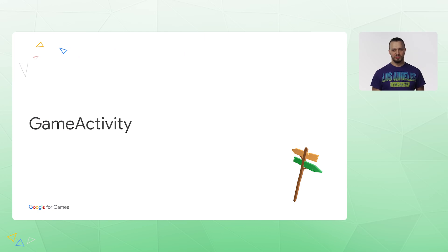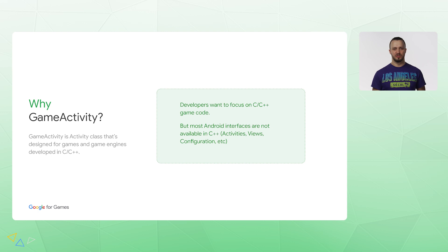GameActivity is a component of Android Game Development Kit. The Activity class is a standard Android interface and a starting point of any Android app. It provides access to the rendering surface and helps you handle lifecycle and input events. However, high-performance game engines are often made in C++, and developers need a way to handle all aspects of the Activity class. Native code developers can use JNI to communicate with Activity, but this way is complicated and error-prone. GameActivity is designed to simplify inter-op between Activity and the native code.